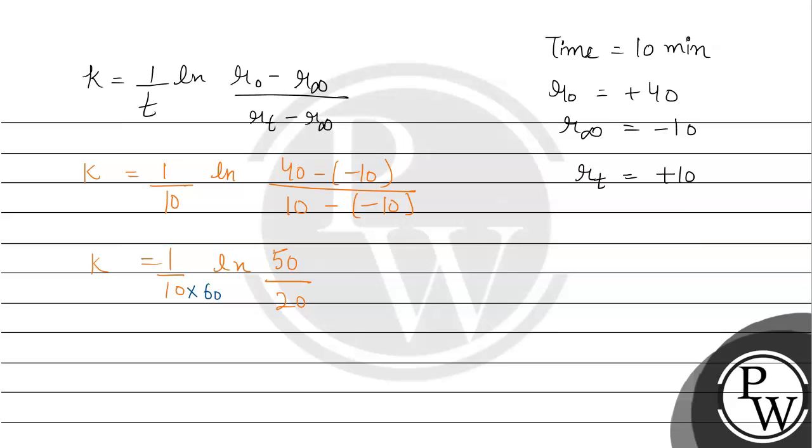Now it will be 1 over 600 and it is natural log. If we convert natural log to log base 10, then it multiplies by 2.303 and it will show log of 50 over 20.